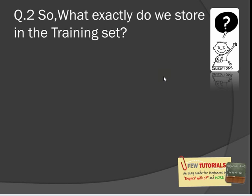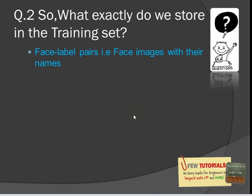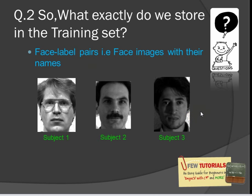Moving on to our second question: what exactly do we store in the training set? It's pretty obvious that we have to store our face-label pairs — the face images with their names. We have our three subjects, and this is the face, and the subject one string is actually going to be the name or label for that subject, which could be a social security number or your own created ID — a combination of letters and numbers. It could be anything, depending on what you're making the system for.